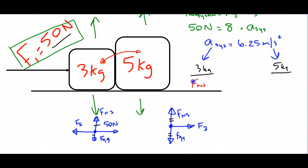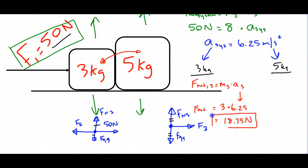For the 3 kilogram object: Fnet equals mass times acceleration, so net force equals 3 times 6.25, which is 18.75 newtons. The net force is made up of the 50 newton force to the right minus F5 to the left. So 50 minus F5 equals 18.75, which gives us F5 equals 31.25 newtons. That's the force the 5 kilogram object exerts on the 3 kilogram object.